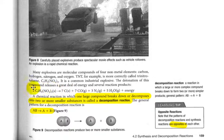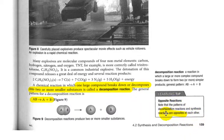A chemical reaction in which one large compound breaks down or decomposes into two or more smaller substances is called a decomposition reaction. You can see it looks like the opposite of a synthesis reaction. Synthesis, we had A and B giving AB. Decomposition, we have AB breaking down into A plus B.